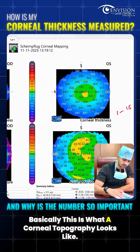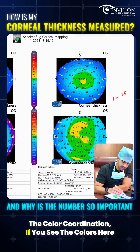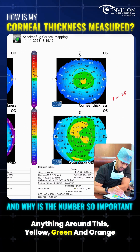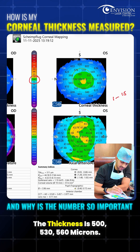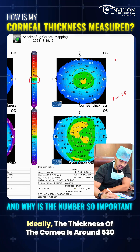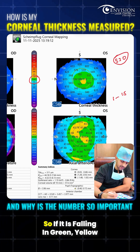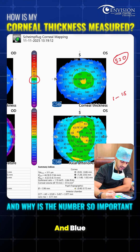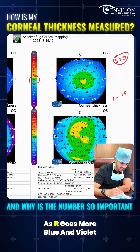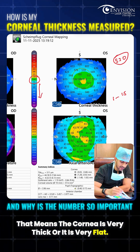This is what a corneal topography looks like. Looking at the color map, the yellow-green and orange areas correspond to thicknesses of around 500 to 560 microns. Ideally, the thickness of the cornea is around 530 microns, which is normal. If it falls in the green, yellow, and blue range, it is slightly in the normal range.